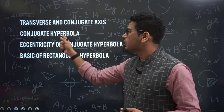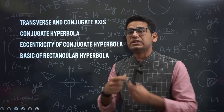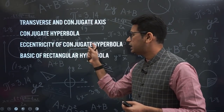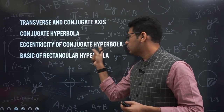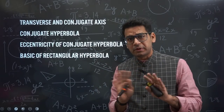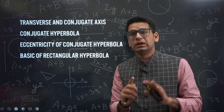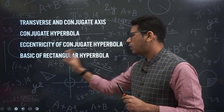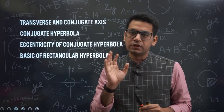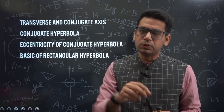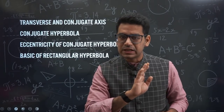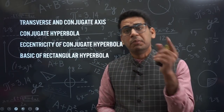For conjugate hyperbola, understand what happens and what gets reversed due to the minus sign. The eccentricity relation for conjugate hyperbola is important. Do not go deep into asymptotes. For rectangular hyperbola, just know the basics — its eccentricity is fixed at root 2 — when it is formed and what it means. Nothing more than that is needed here.